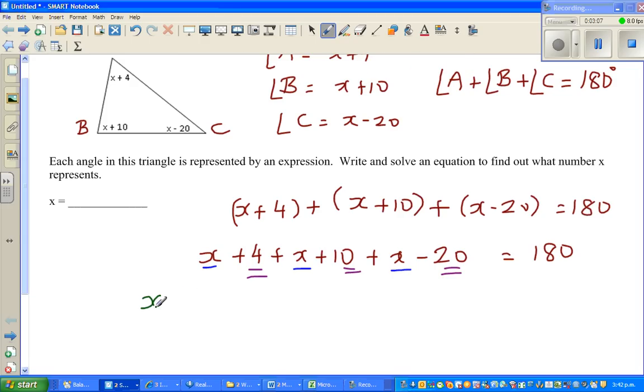So let us write in groups of x. So you've got x plus x plus x. So these are like terms. And then you've got 4 plus 10 minus 20 is equal to 180.